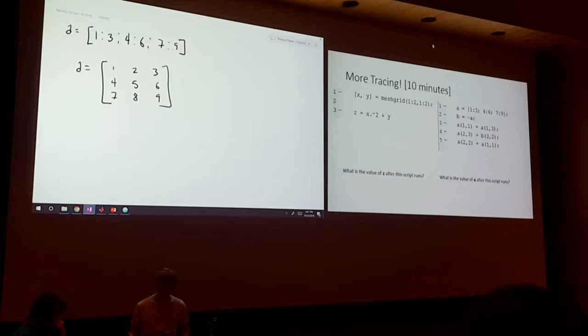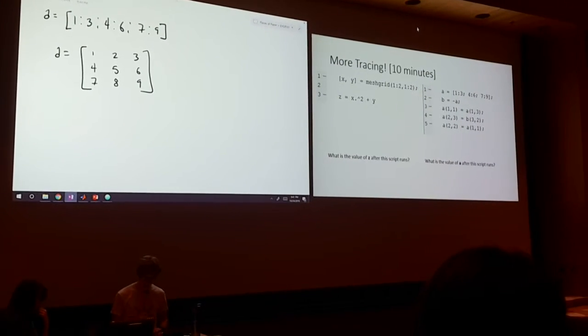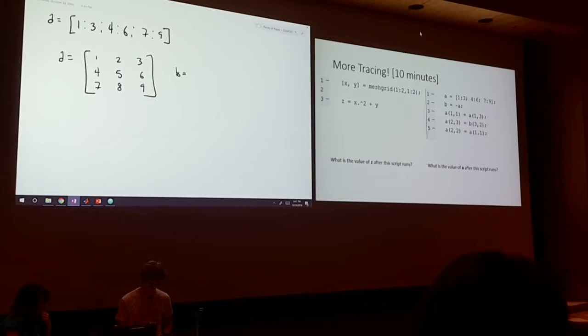And now we see that B is equal to negative A. And by saying negative A, what we're doing is just negating A and adding a negative sign in front of everything. This would be pretty self-explanatory.